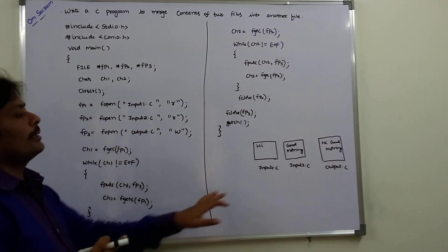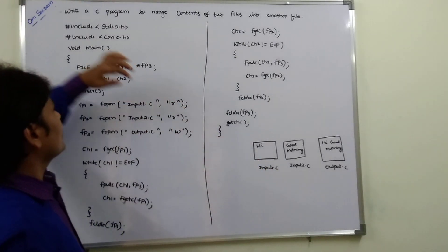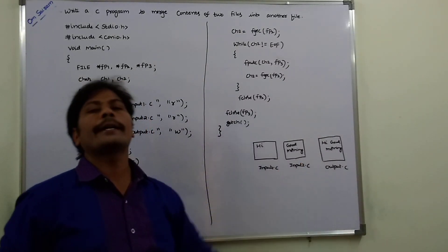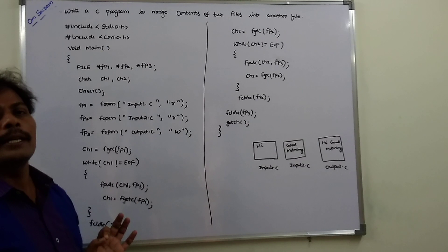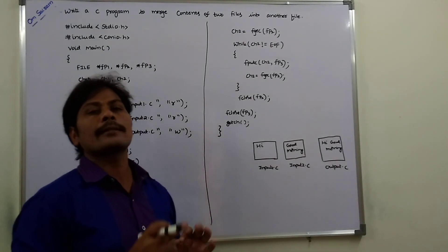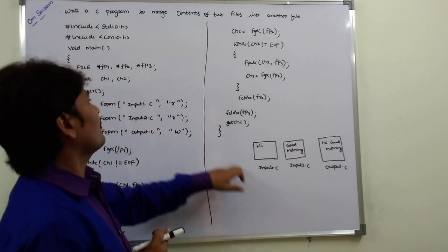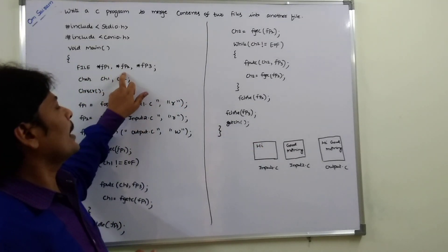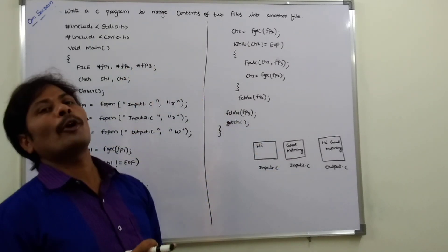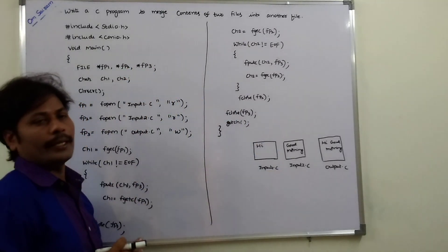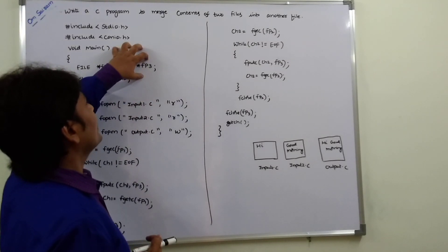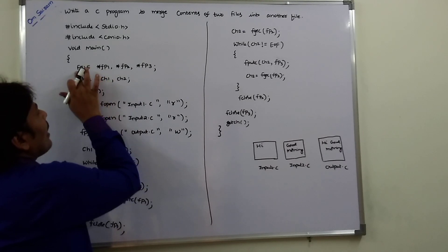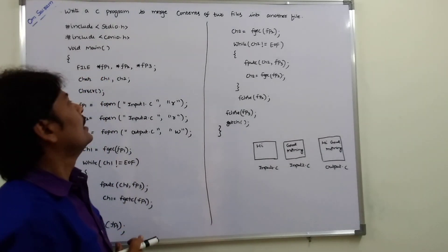There are three files: input1.c, input2.c, and output.c. Each and every file has a particular file pointer. First file pointer is fp1, second file pointer is fp2, and third file pointer is fp3.